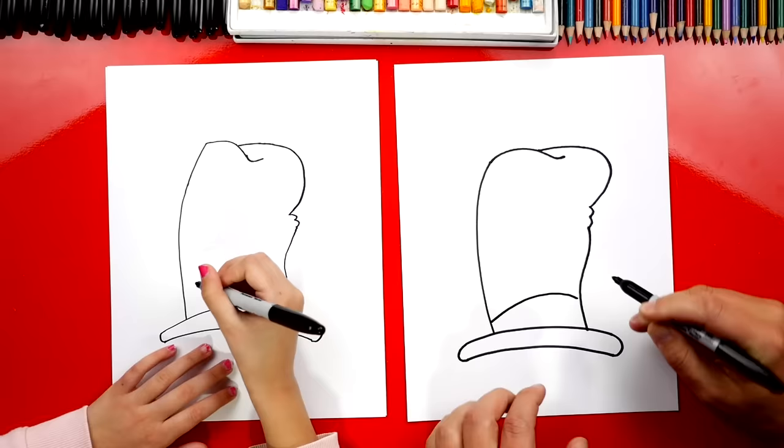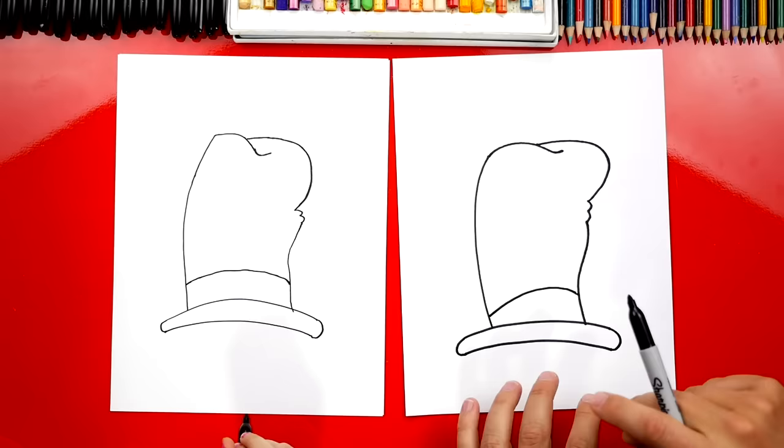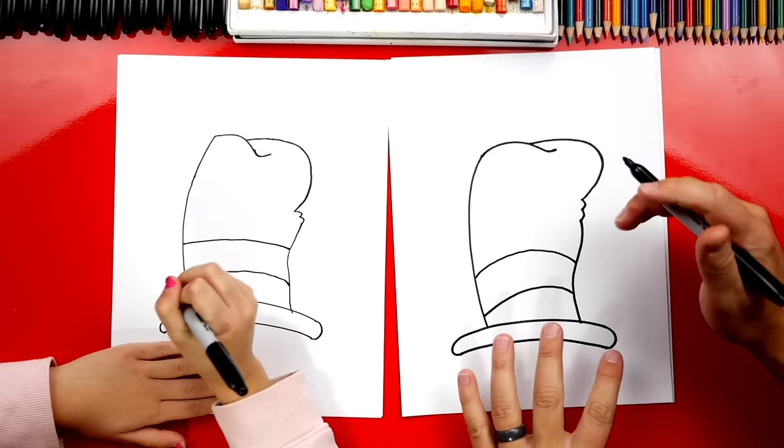We're going to start down here at the bottom and draw a curve. I'm kind of close over here and then far away on the right side. Let's draw the next stripe. We're going to draw another curve that comes across. So it's about halfway up the S curve on the right side.